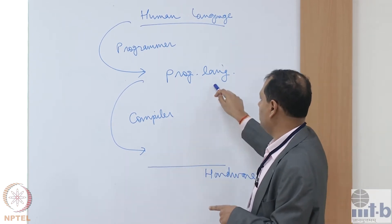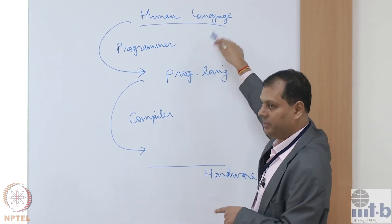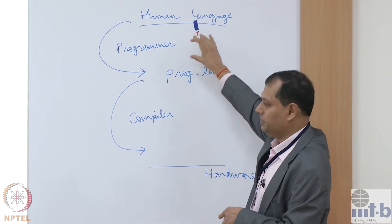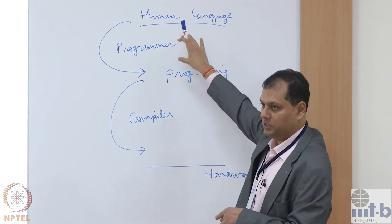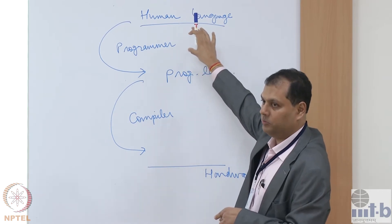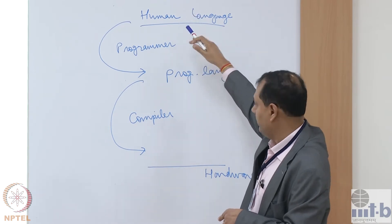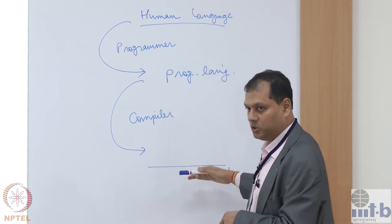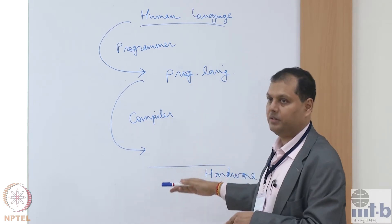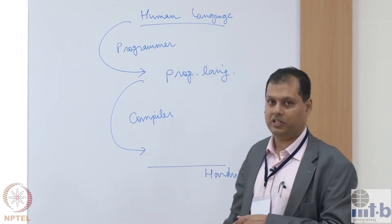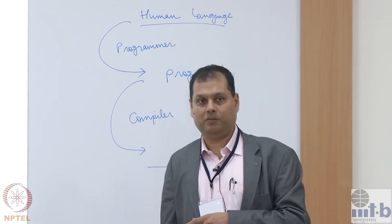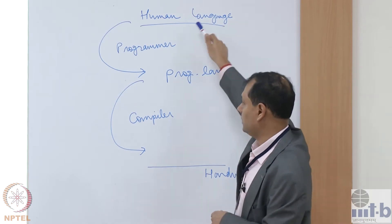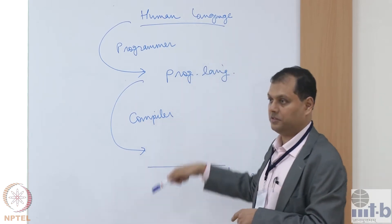If the programming language is more and more semantically rich, the job of the programmer becomes easier because it's closer to the human level. Whereas if the language is not that rich and it's close to machine language, it's actually very difficult for the programmer because the programmer has to cover most of the distance.